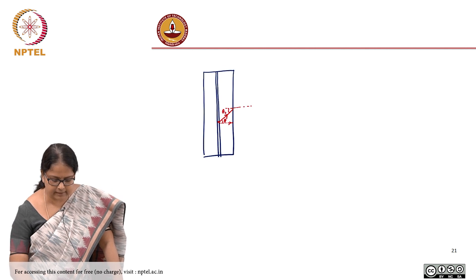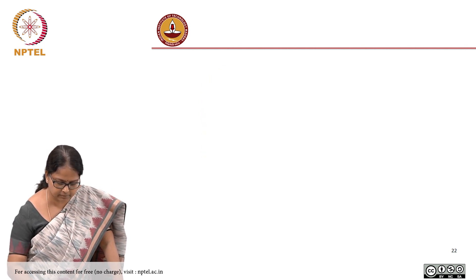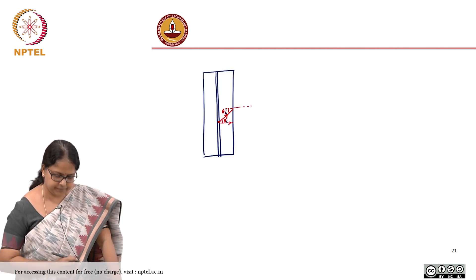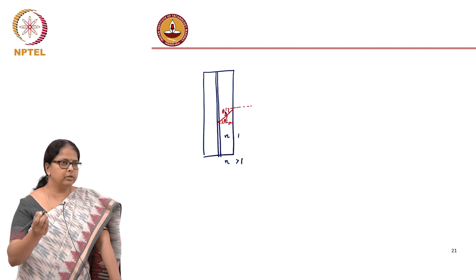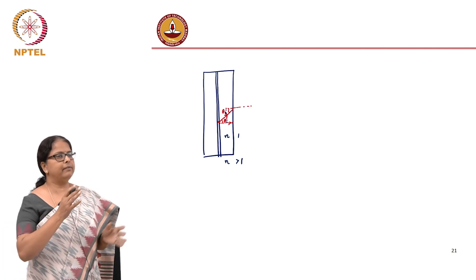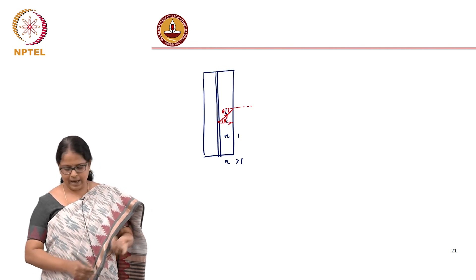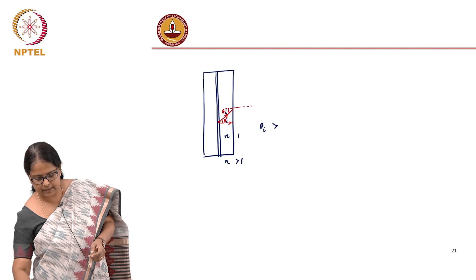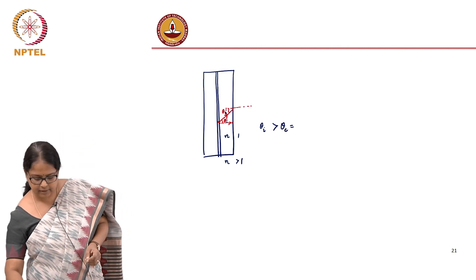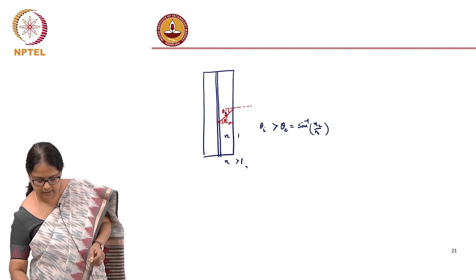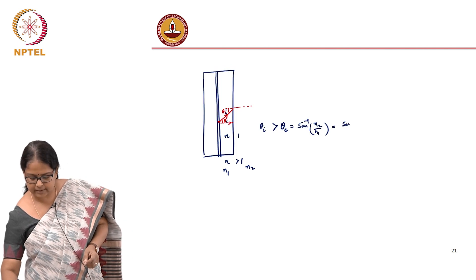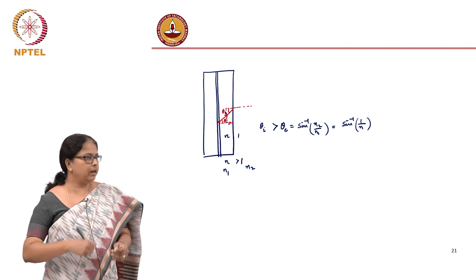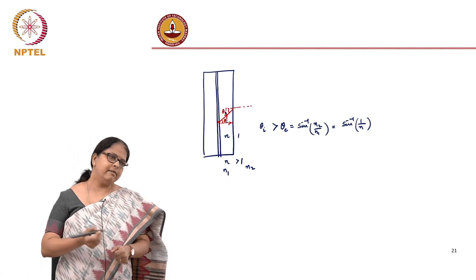Then this angle of incidence is theta, the same as theta_i. So let us say this is theta_i and you have a change in medium n to 1. We know that n is greater than 1 — I already told you it is like 3.5. Whenever you have light travelling from a denser medium to a rarer medium, when the angle of incidence theta_i is greater than what is called the critical angle — defined as sin⁻¹(n₂/n₁), where n₂ is the second medium and n₁ is the first medium — in our case it is sin⁻¹(1/n) — you will have total internal reflection.